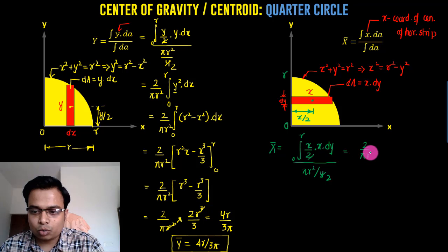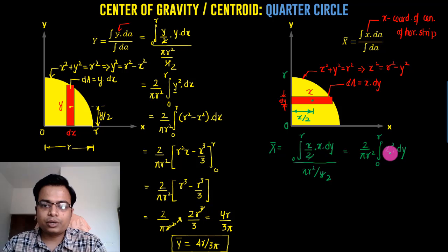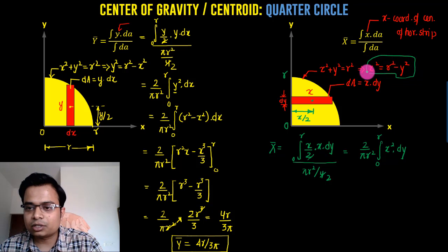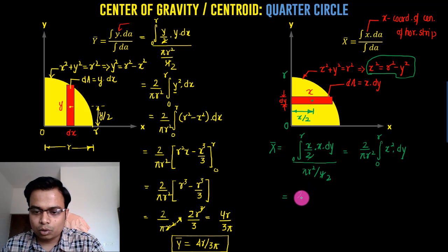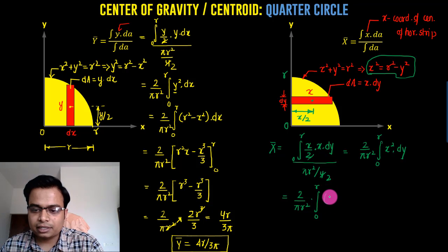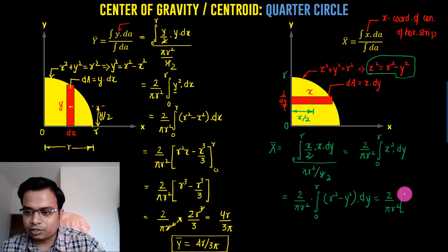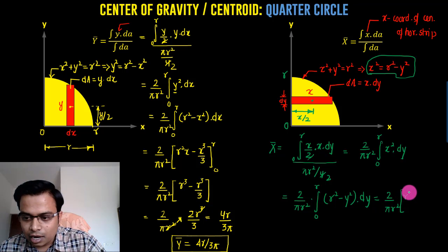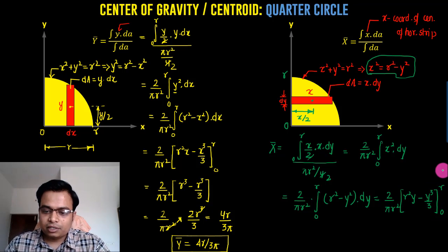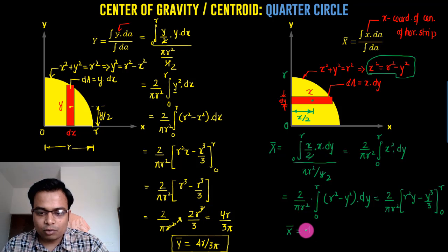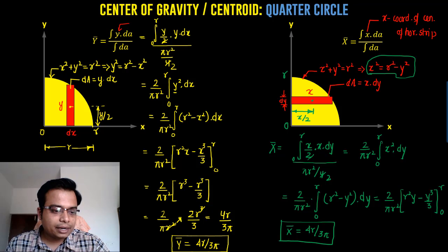So we have (2 / πr²) times the integral from 0 to r of x²·dy. Substituting x² = r² − y², this becomes (2 / πr²) times the integral from 0 to r of (r² − y²)dy. Integrating gives r²y − y³/3, evaluated from 0 to r. Plugging in the limits gives the final value of x̅ = 4r / 3π — the same result.